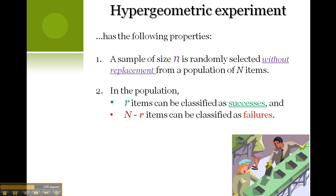Let's consider a hypergeometric experiment with the following properties. A sample size n is randomly selected without replacement from a population of capital N items. In the population, r items can be classified as successes. N minus r items can be classified as failures.